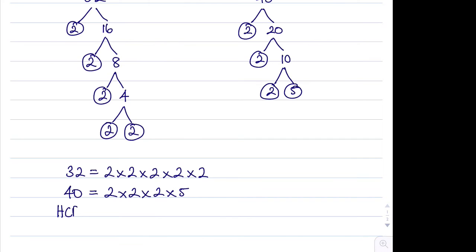To find the highest common factor, we look and see what we've got as common factors in both of these. So we have one common factor of 2, another common factor of 2, and a third common factor of 2. We don't have any more 2s in the 40, and we don't have any 5s in the 32. So the highest common factor is 2 multiplied by 2 multiplied by 2, which is 8.